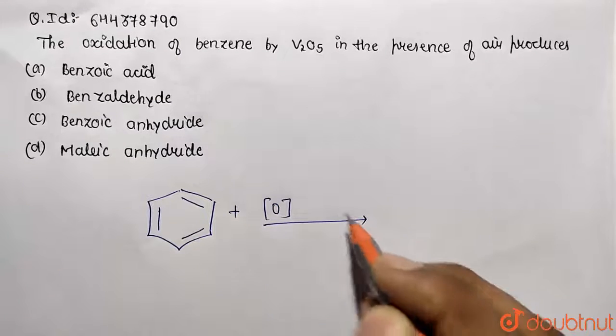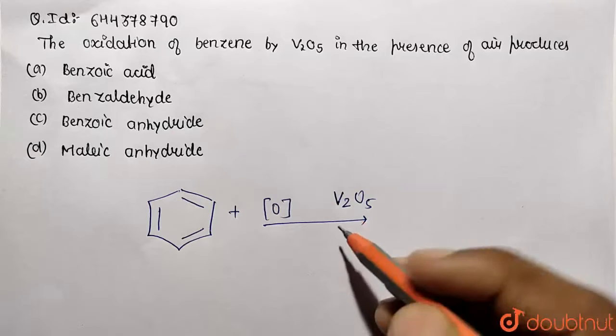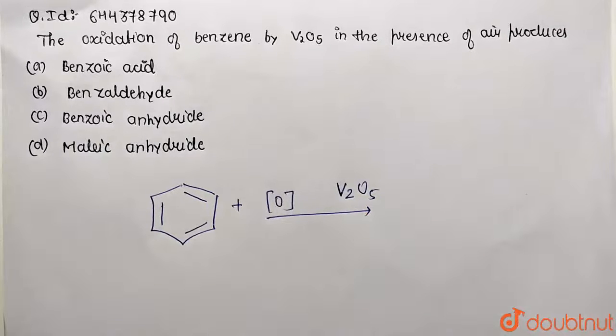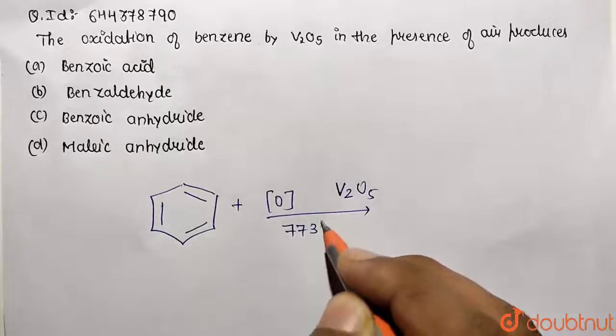And what is the reagent used? Vanadium pentoxide, so V2O5. This is the oxidizing agent. We need to mention certain temperature conditions. This is being carried out at 773 Kelvin.